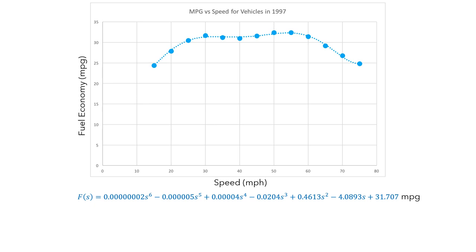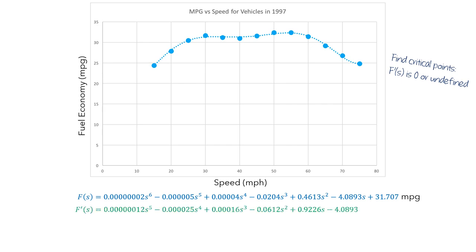As we saw in the previous video, our method is to find critical points of f — that is, points where the derivative is either zero or undefined. First, we can use the power rule to compute the derivative function of f. Next, let's look at the graph of this derivative function.